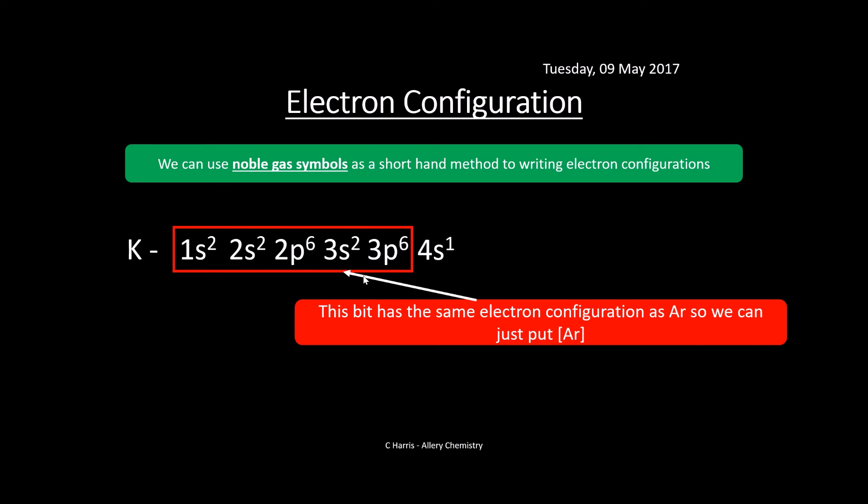Now this front bit has the same electron configuration as argon. To make it shorter, we can put argon in square brackets. This tells us the electron configuration of argon and 4S1. We can either write the full electron configuration or write a shorthand version with square brackets argon and then 4S1. Pretty straightforward.